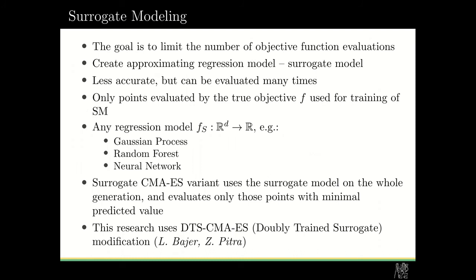So the surrogate modeling. As I said before, our goal is to limit the number of objective function evaluations. And this is the reason why we use surrogate modeling. The surrogate model creates an approximating regression model which can be less accurate, but it can be evaluated many times because it usually doesn't cost anything.